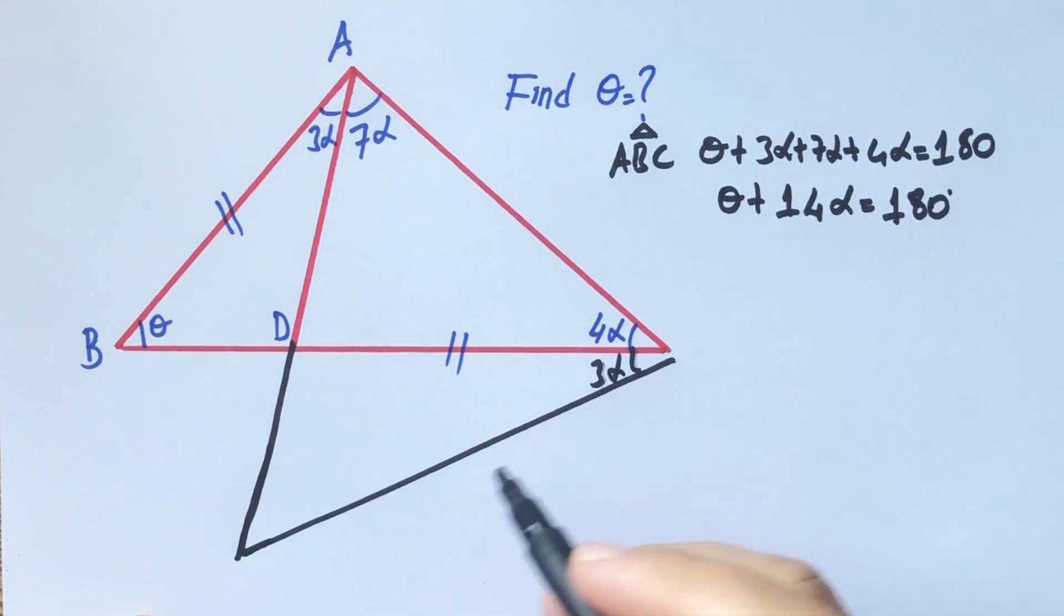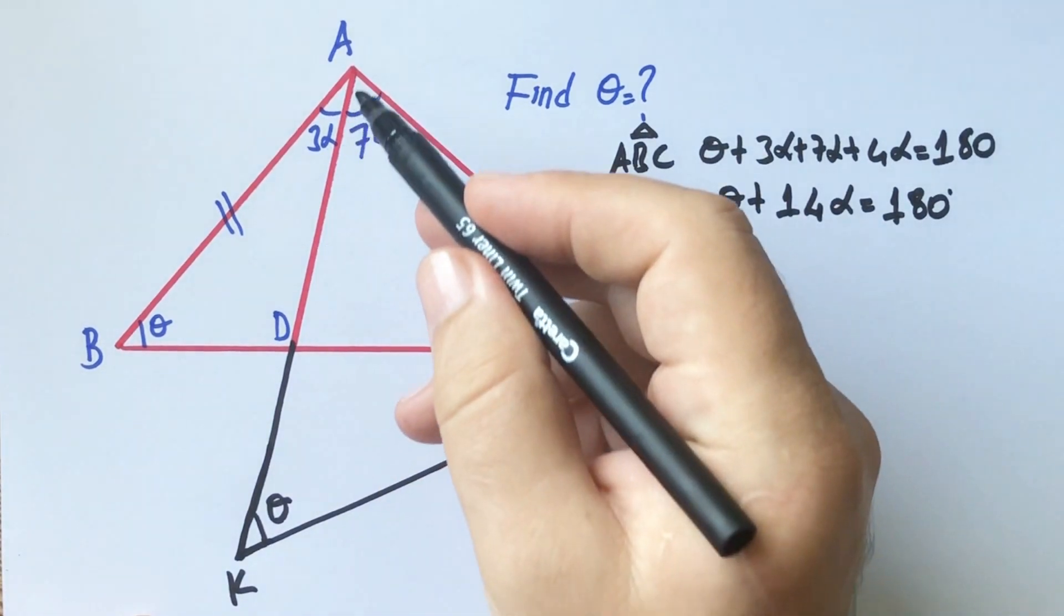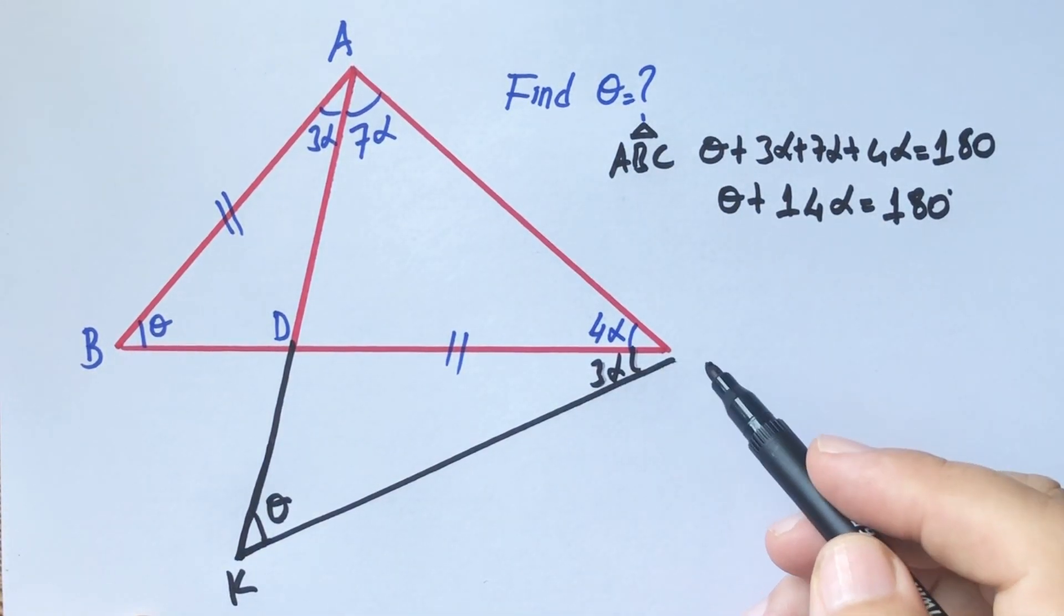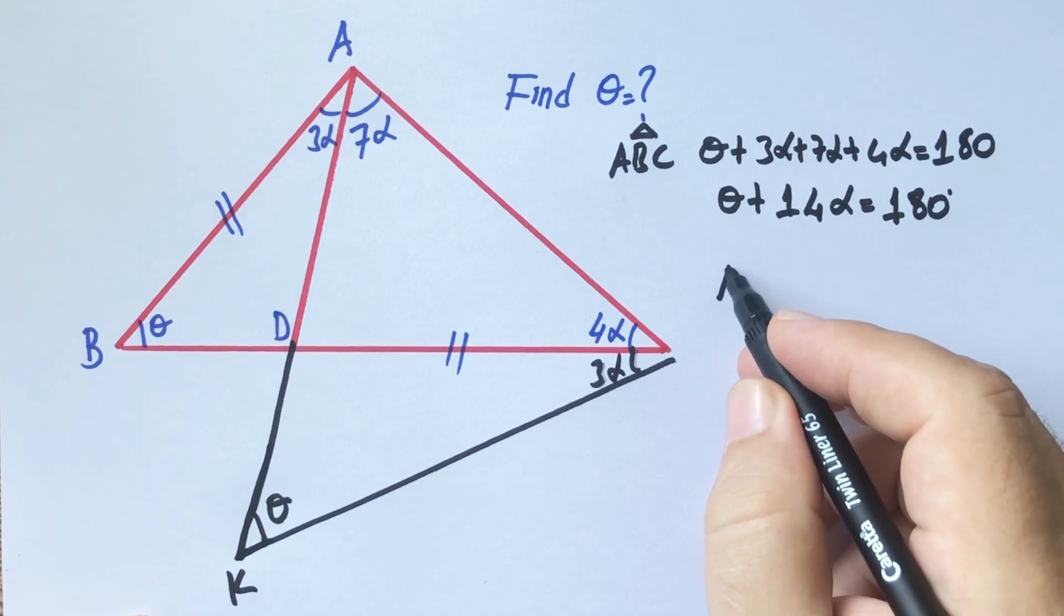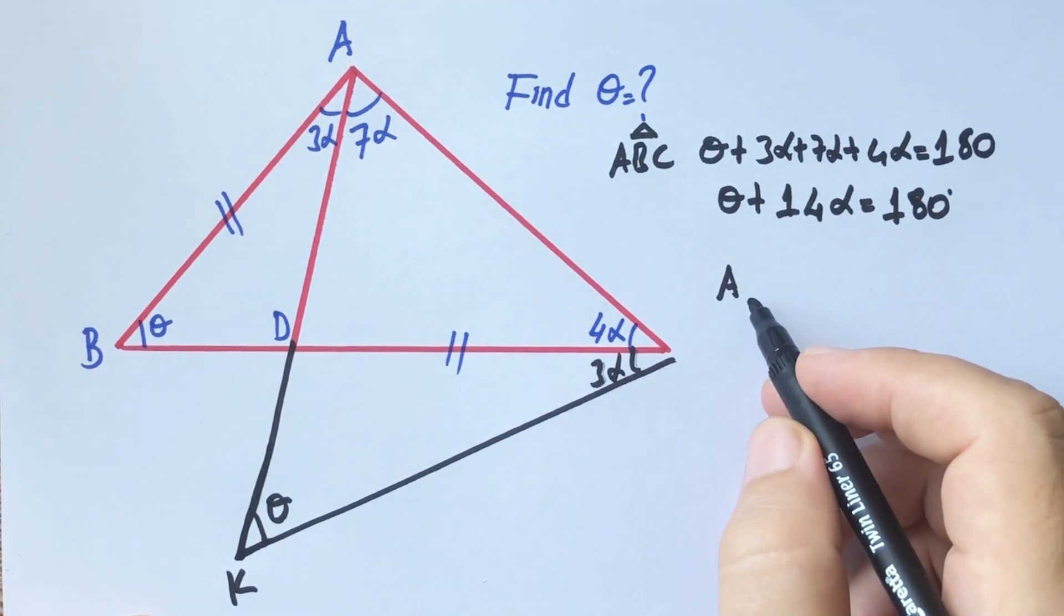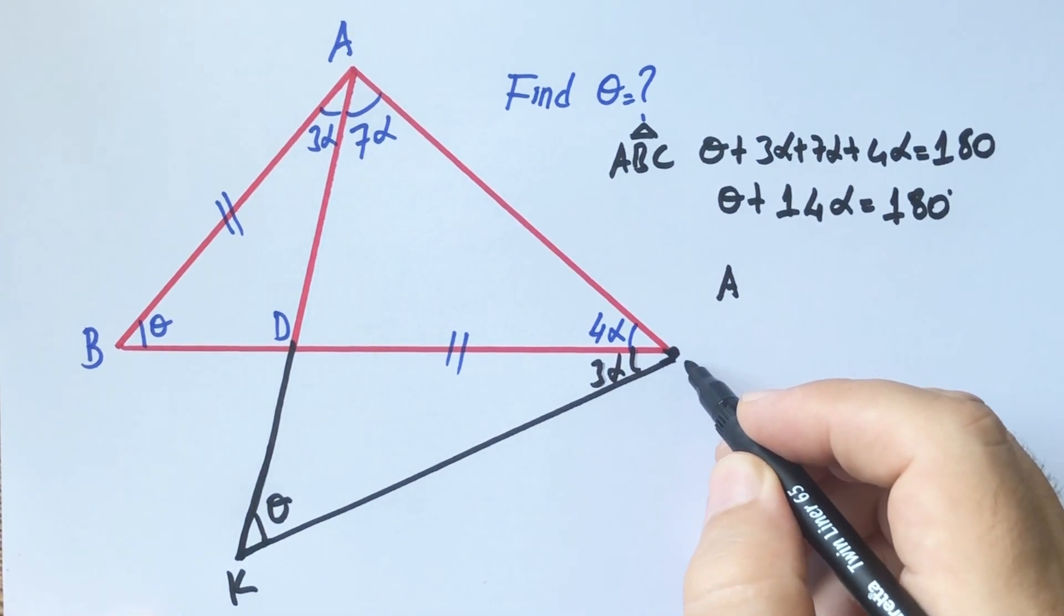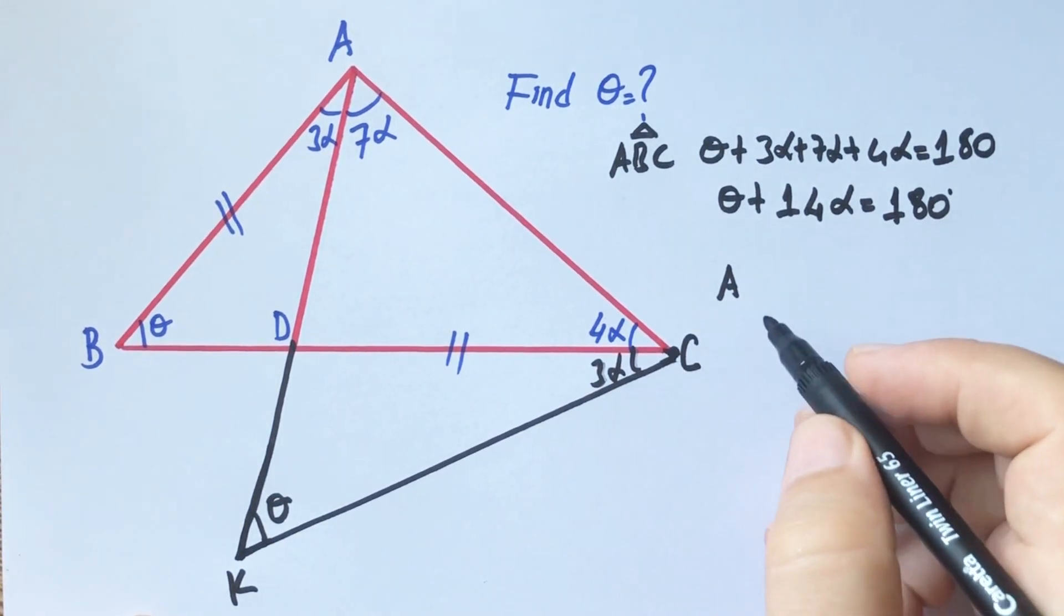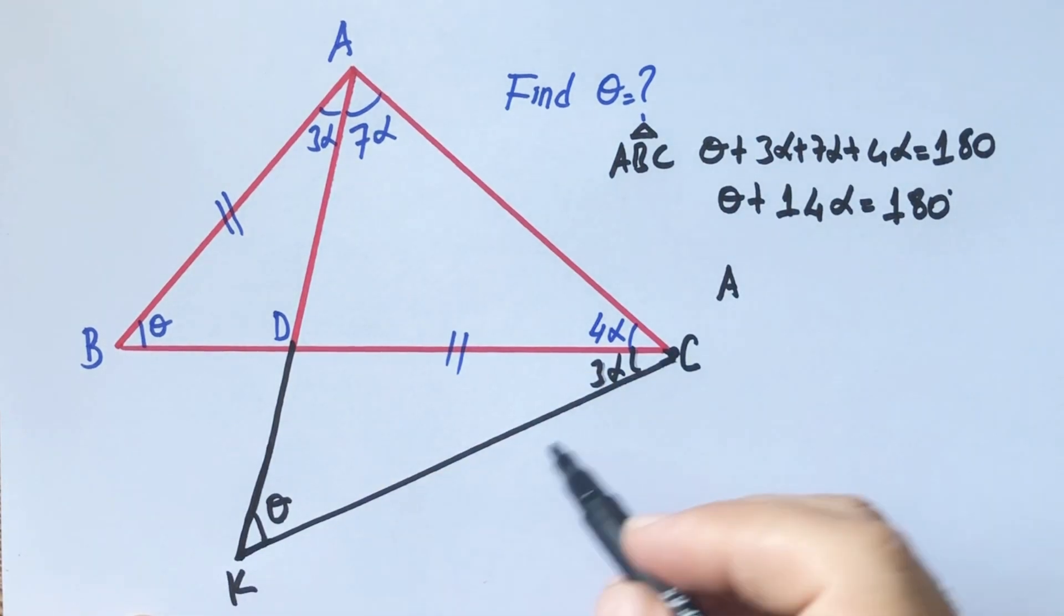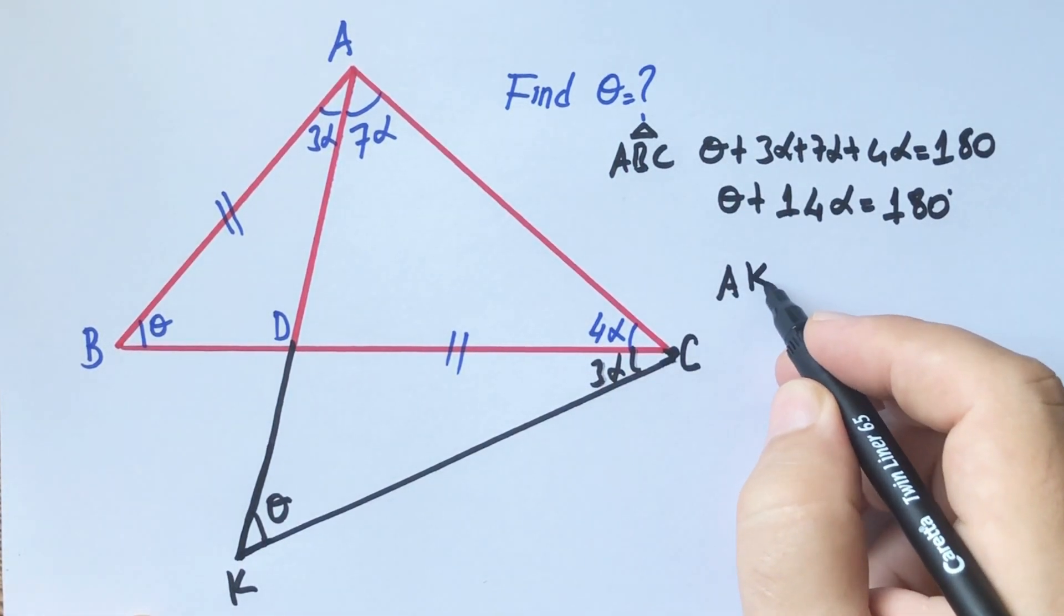Notice that seven alpha, seven alpha. This angle must be theta. And then, this triangle is an isosceles triangle. Therefore, AK must be equal... Let's call here C point. AK must be equal KC.